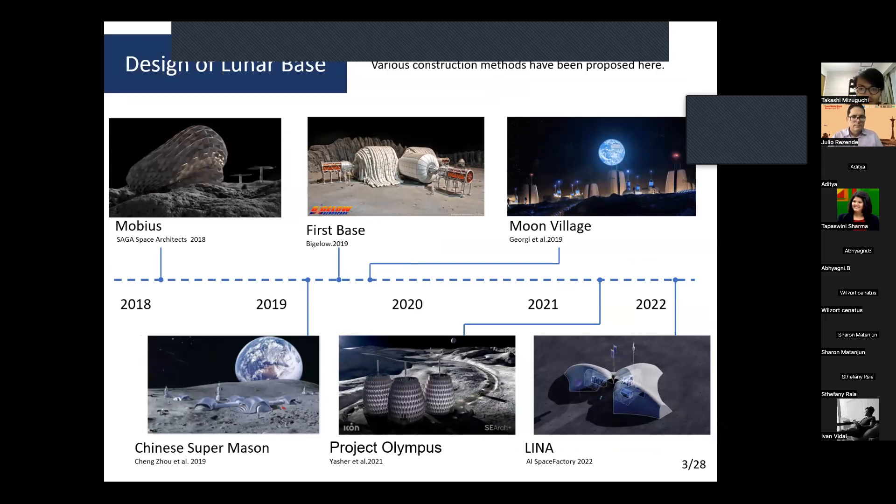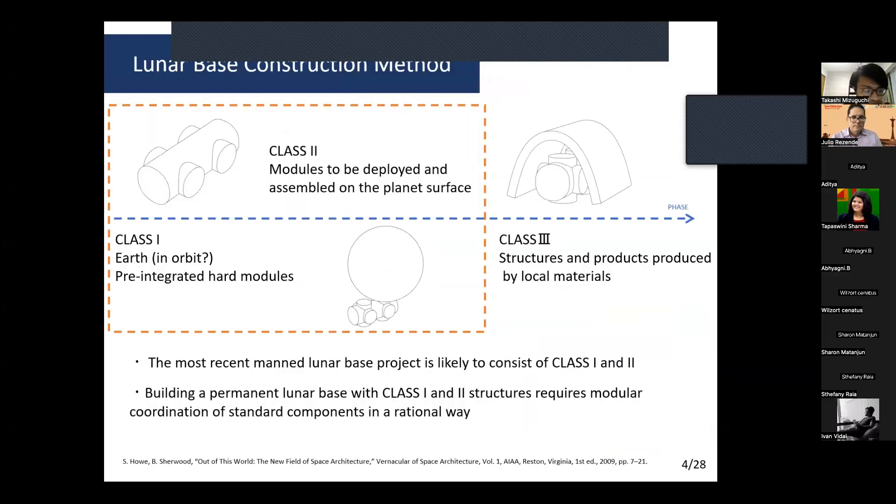Various construction methods have been proposed here. Starting with the classification of construction methods, there are three types: CLASS I is made on Earth with pre-integrated hard modules, CLASS II consists of modules to be deployed on the planet surface, and CLASS III structures and products are produced by local materials in situ. It becomes more technologically advanced and challenging as one moves to the right in this figure.